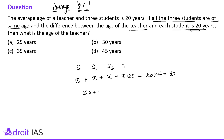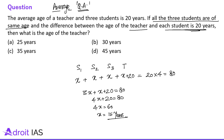So 3x + (x + 20) = 80, which gives 4x + 20 = 80, then 4x = 60, so x = 15 years. The teacher's age is x + 20 = 15 + 20 = 35 years.